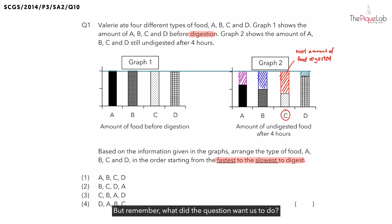But remember, what did the question want us to do? They wanted us to arrange the food from the fastest to the slowest to digest. And if C has the most amount of food digested, this tells us, must C be the fastest or slowest to digest? C must have been the fastest. So we can also write this down. C is the fastest to digest.